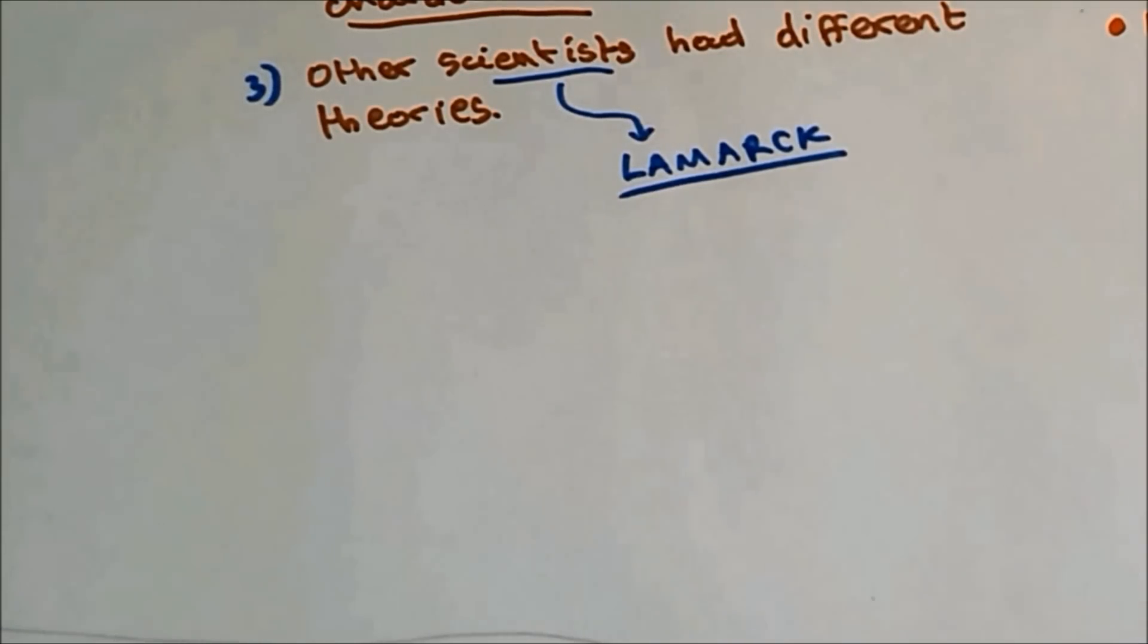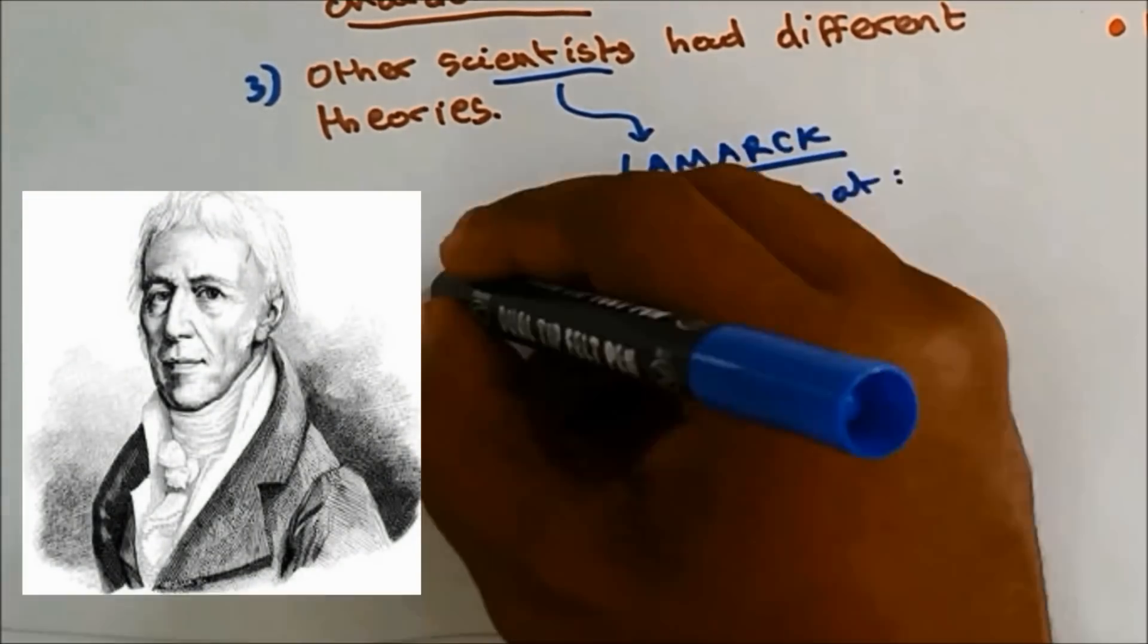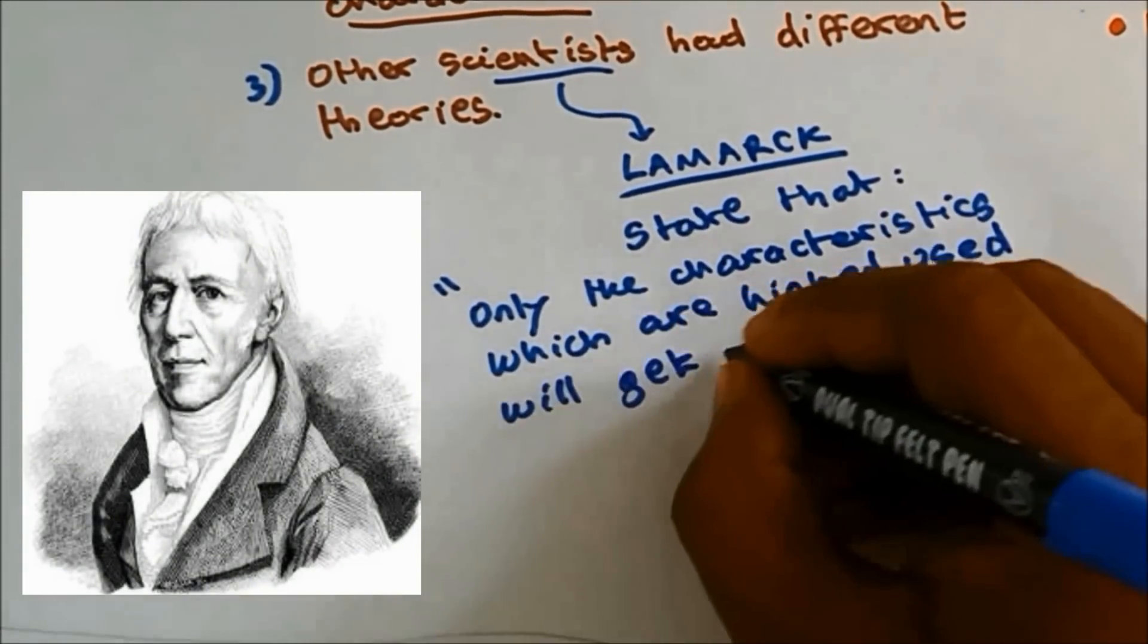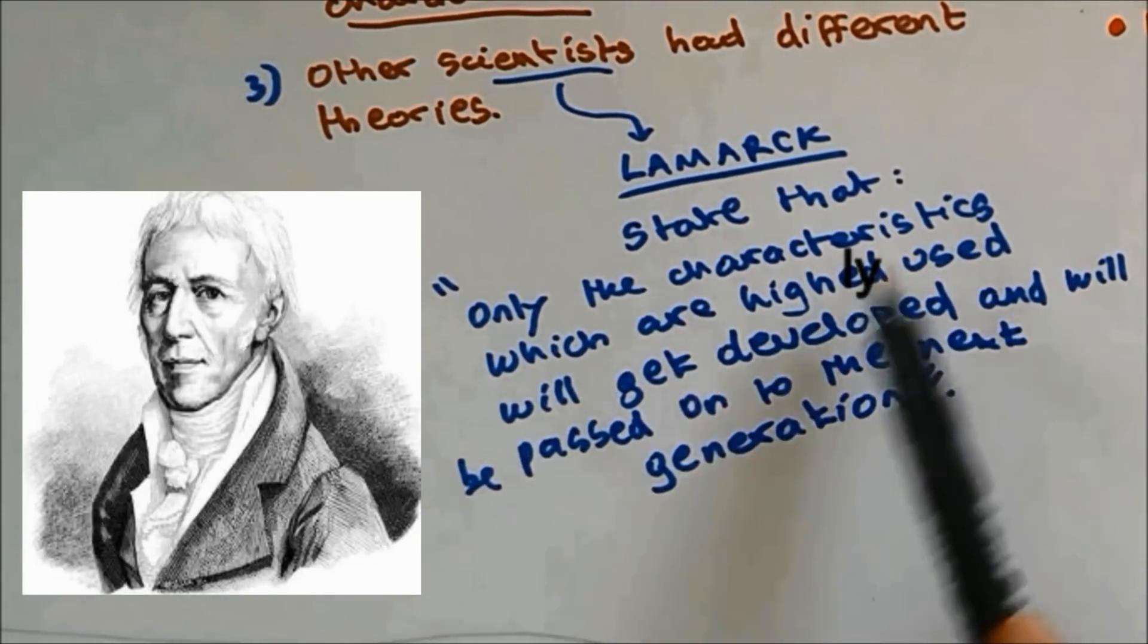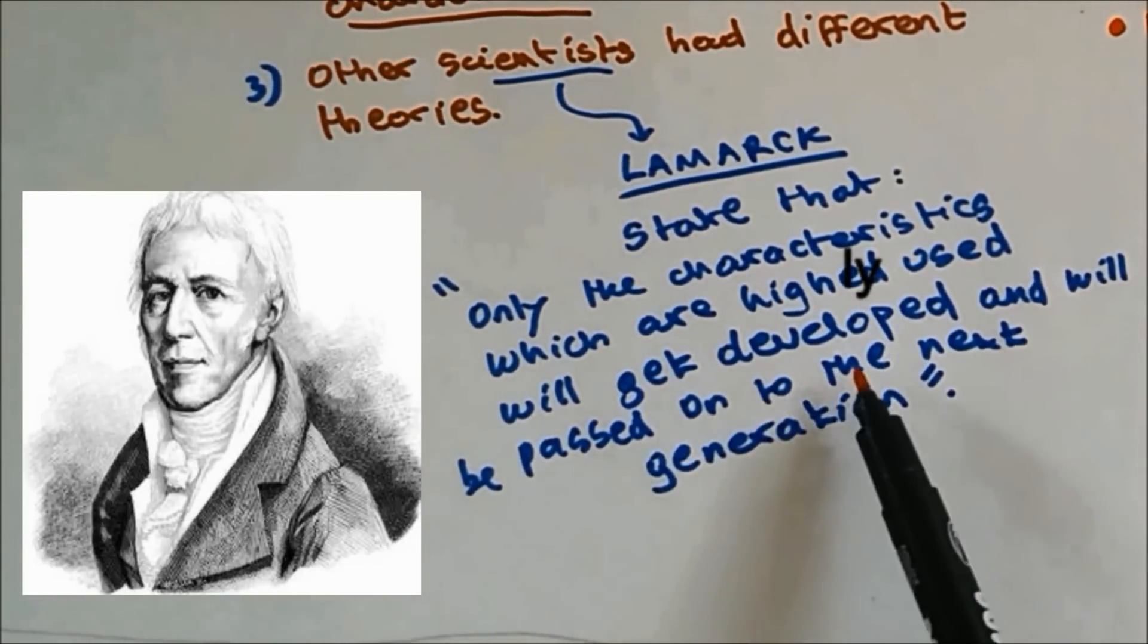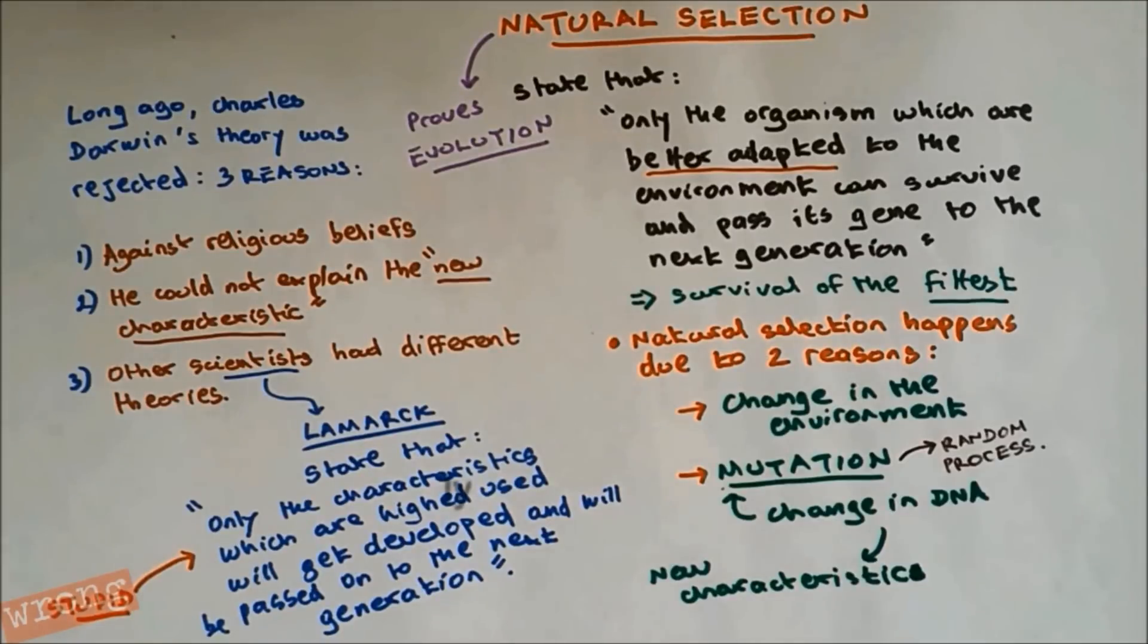Lamarck had different ideas compared to natural selection. So he was saying only the characteristics which are highly used will be developed and will be passed on to the next generation. His theory was rejected and eventually Charles Darwin theory was accepted.